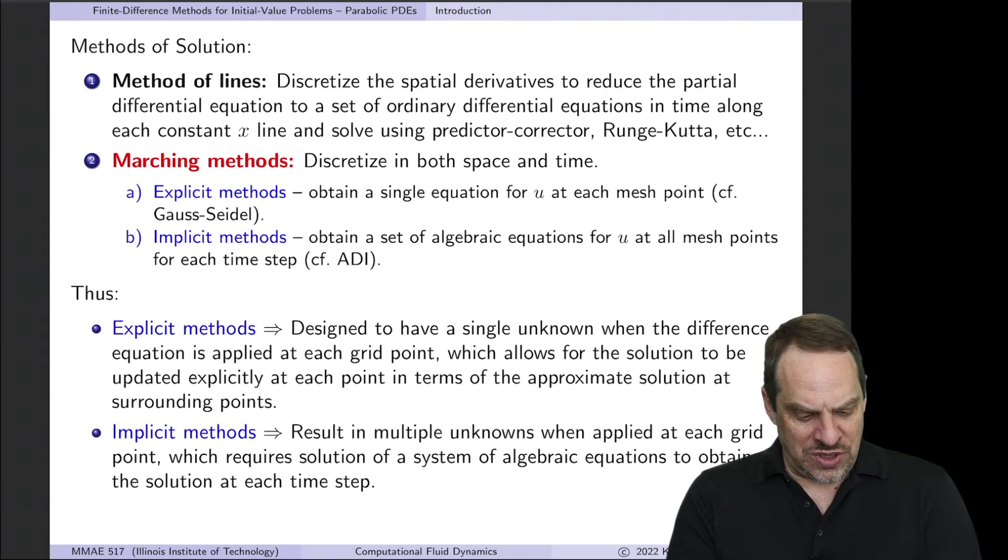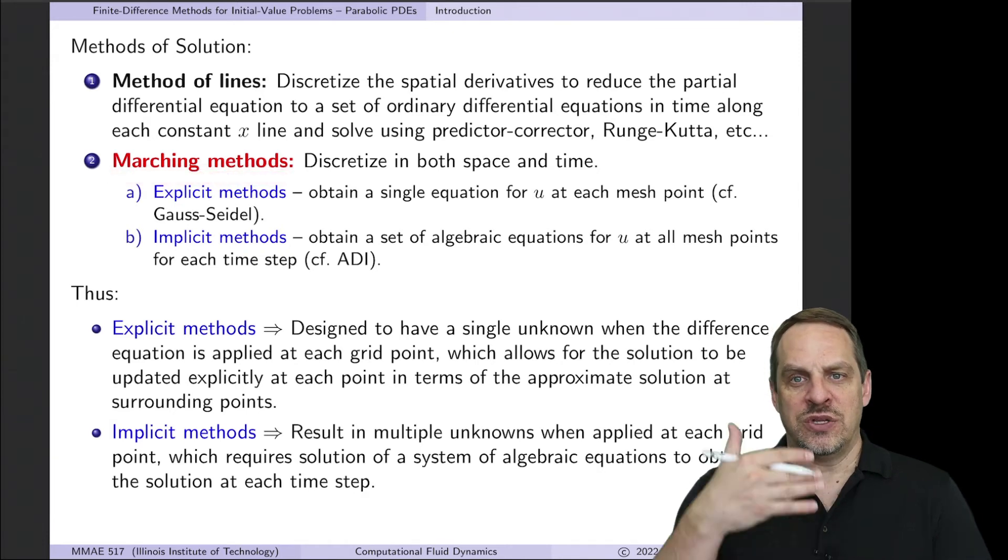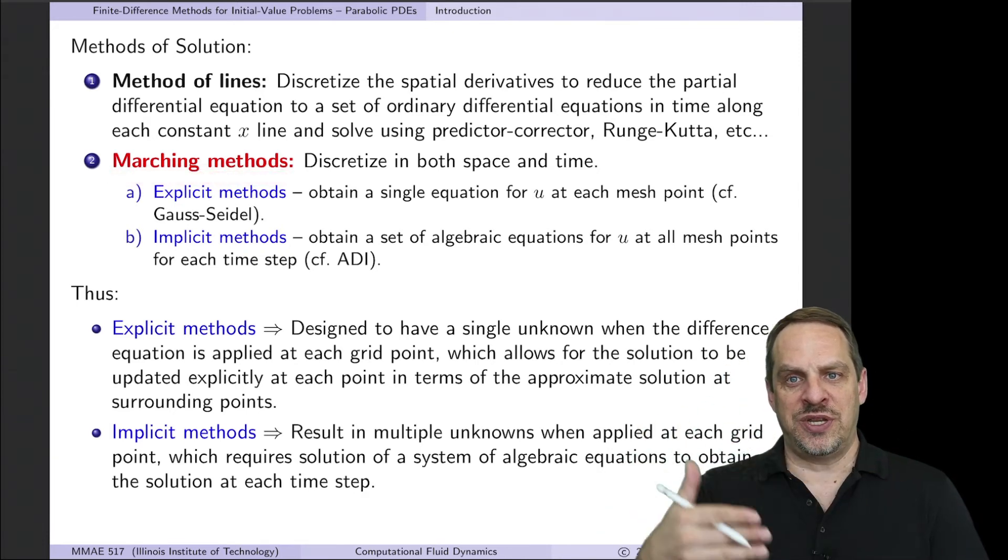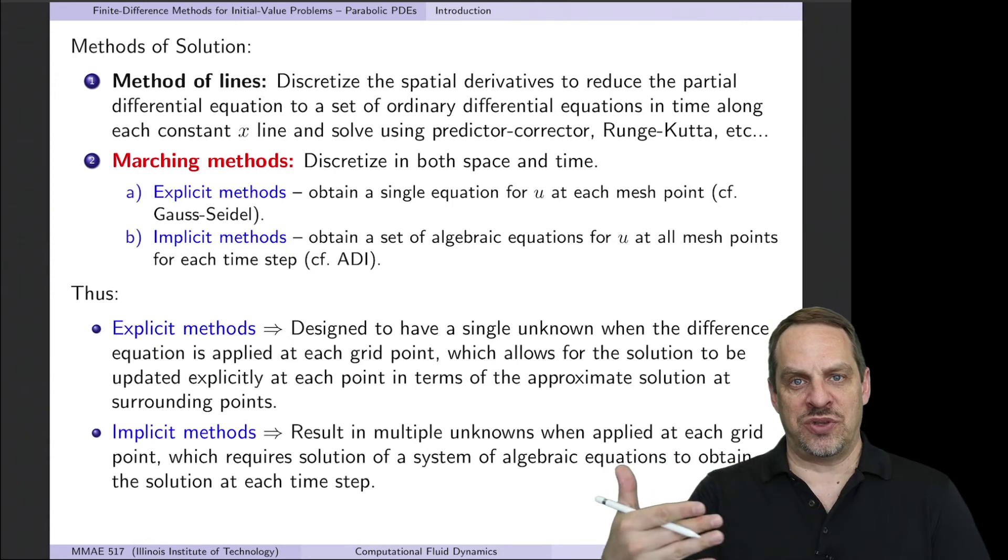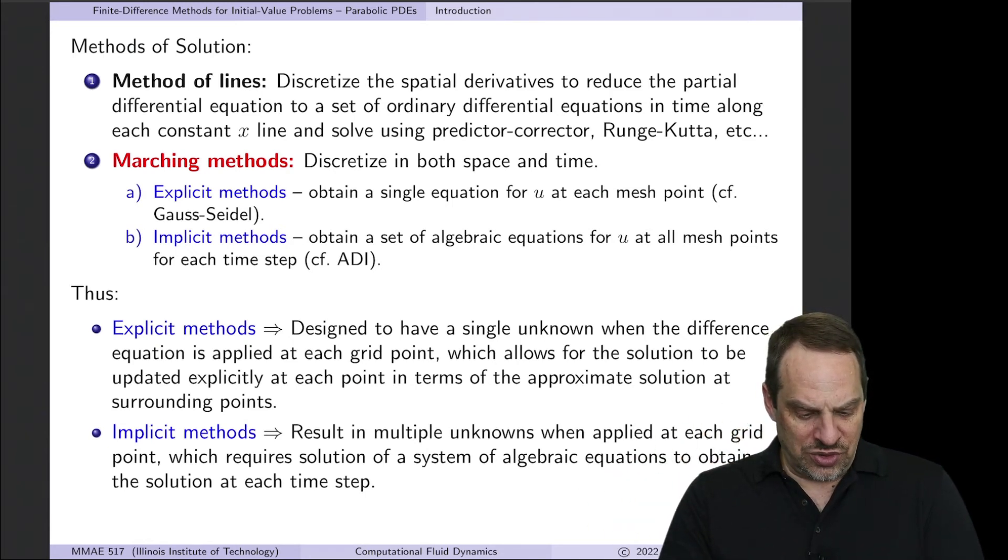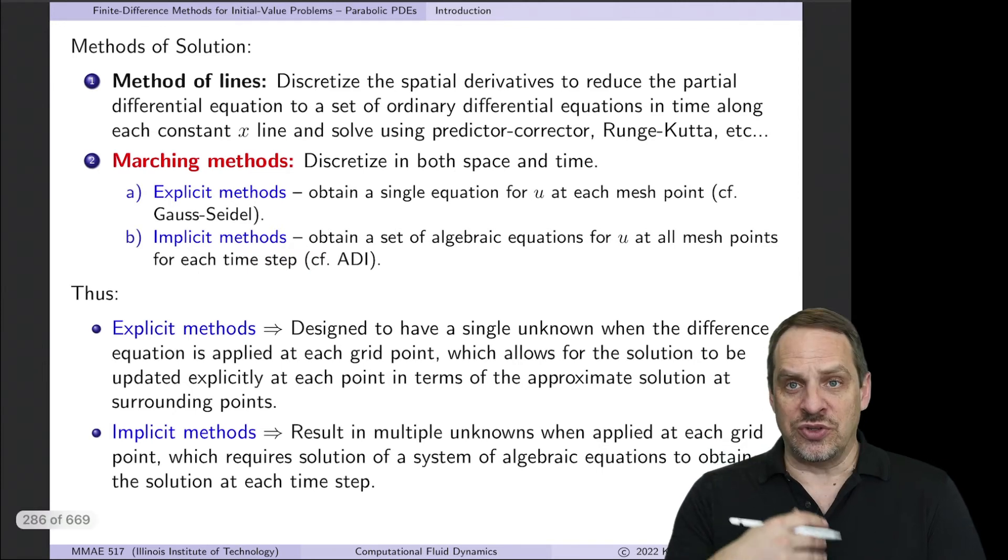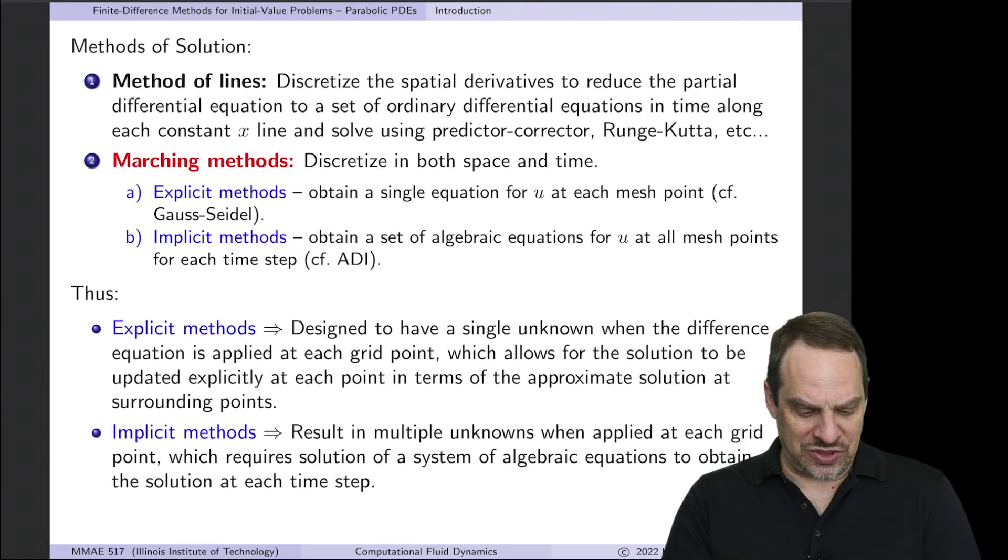So what we're going to focus on here are the more common methods based on marching. So we'll solve the solution at one time step, march forward to the next time step, get the solution, march forward, get the solution. And in order to do that marching, there are two subclasses of marching methods, explicit methods and implicit methods.